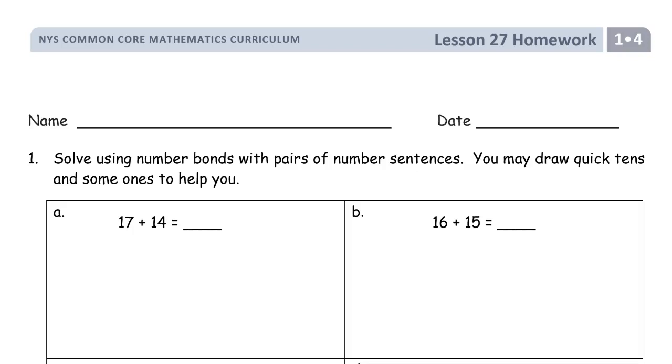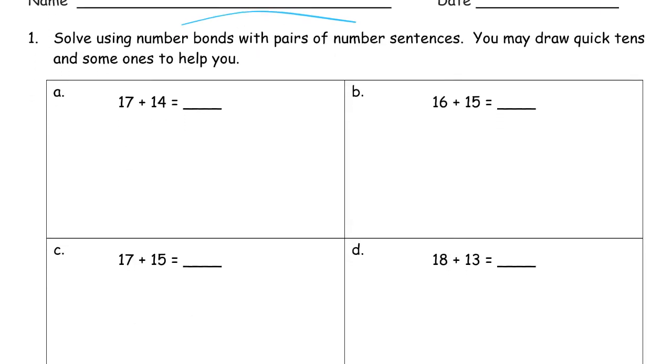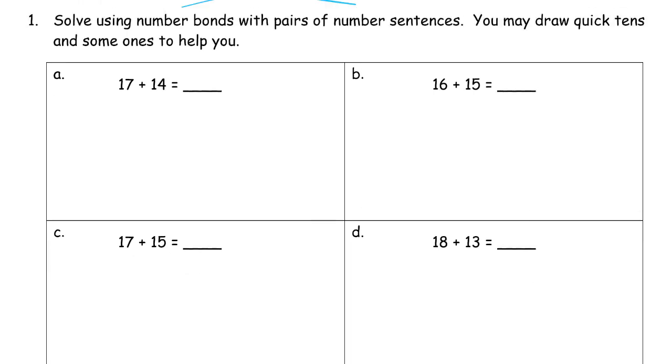Welcome to the homework for lesson 27. This is module 4 of grade 1. Get your name on here first. And we're using number bonds and writing pairs of number sentences. That's two number sentences for each problem. And it says here, you may draw quick tens and some ones to help you. So if you're a fan of drawing quick tens and ones, sure you can do every single one that way if you want. I highly encourage you to do the number bonds though. You may find that once you get used to them, they're a lot easier and faster.